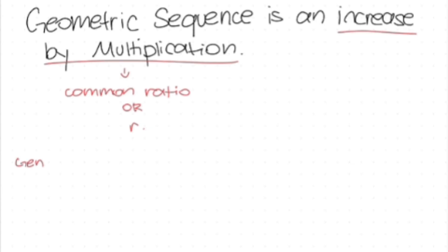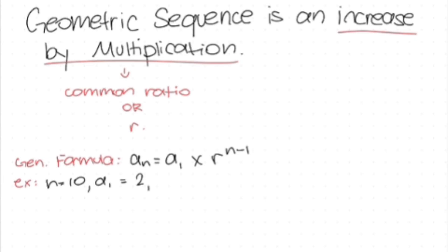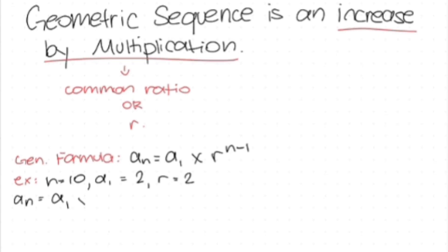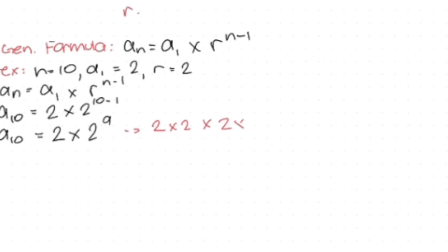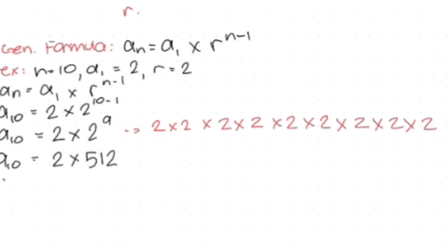Here's an example: n is equal to 10, A sub 1 is equal to 2, and R is equal to 2 as well. First, we use the general formula, then replace all variables with the given values. So, A sub 10 is equal to 2 times 2 raised to the power of 10 minus 1, which is 2 times 2 to the power of 9. Two to the power of 9 equals 512, so A sub 10 is equal to 2 times 512, which gives 1024. That is our final answer.